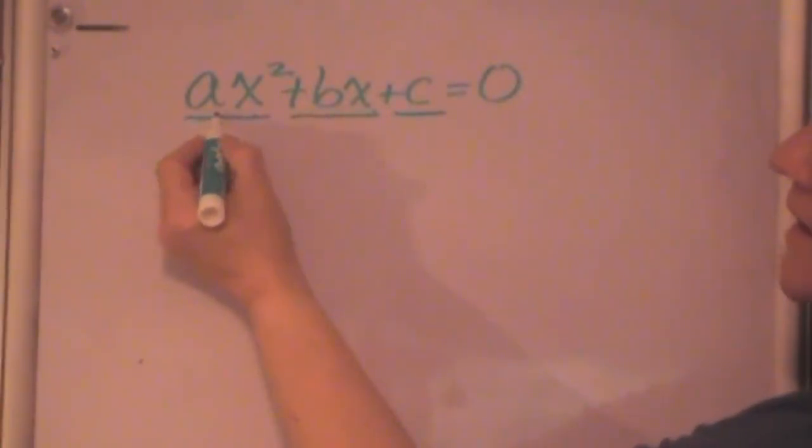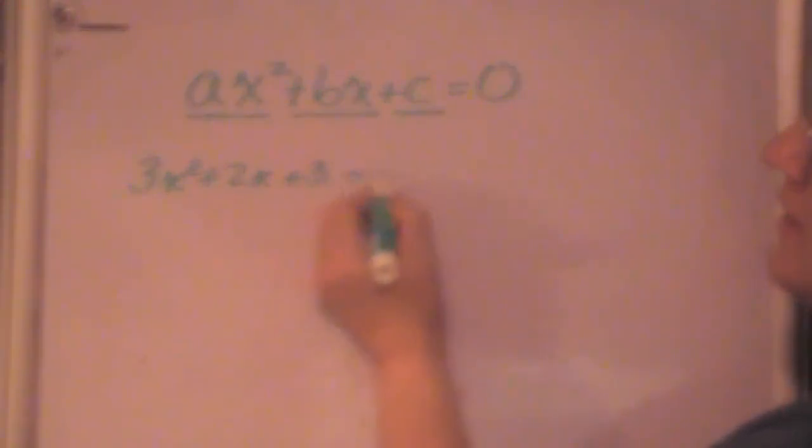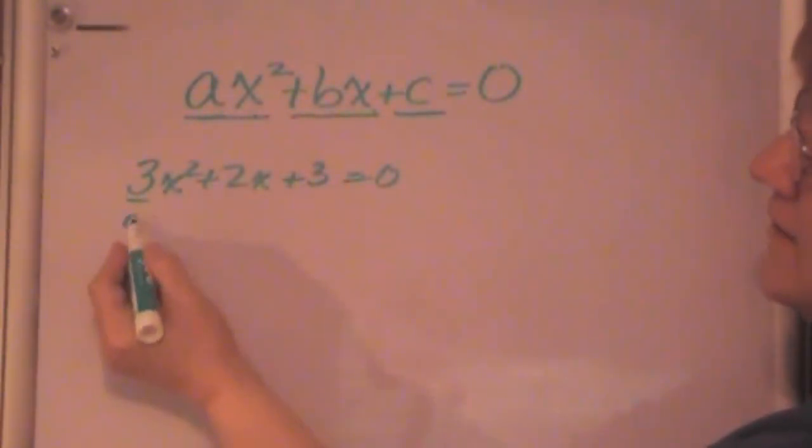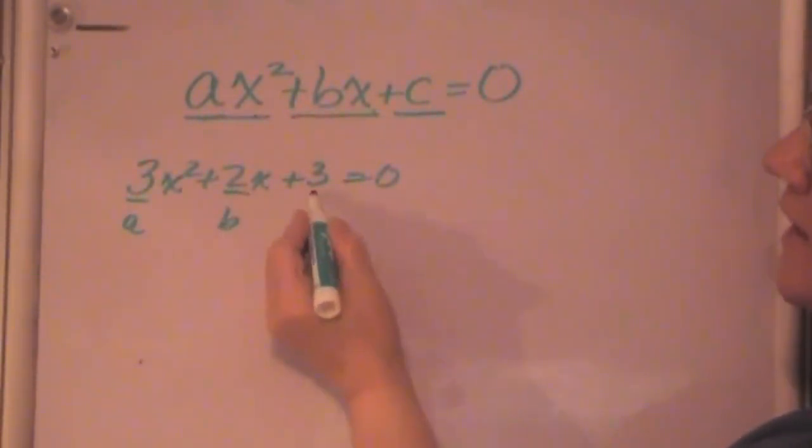So in this case, a is the coefficient of the x squared term. If I had 3x² plus 2x plus 3 equals 0, 3 is a, 2 is b, and c is positive 3.